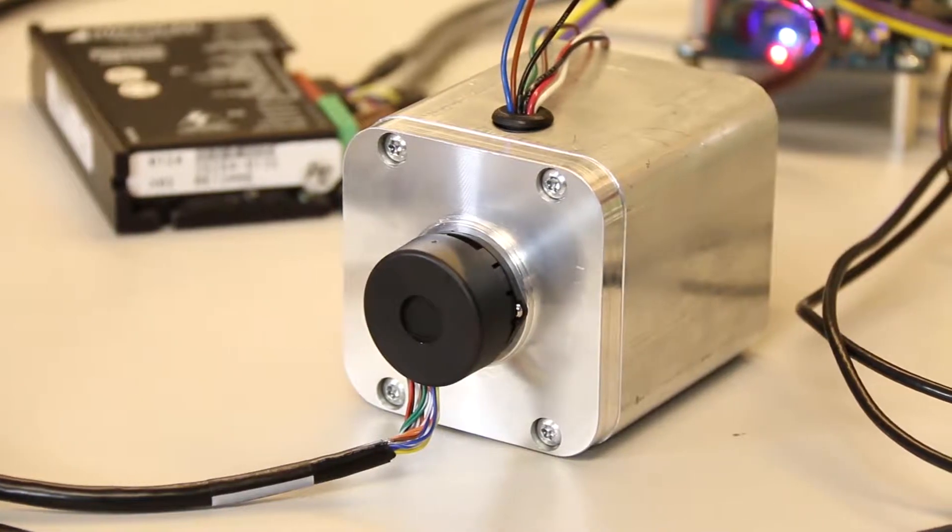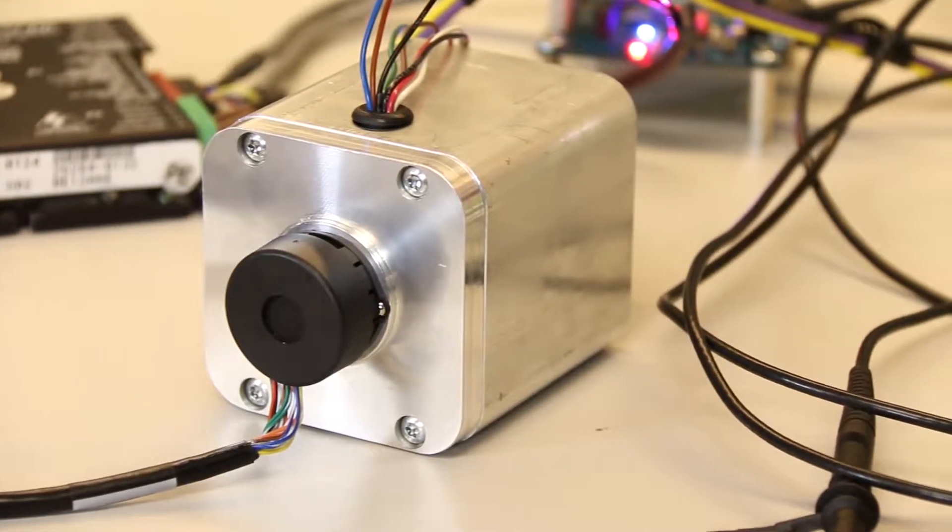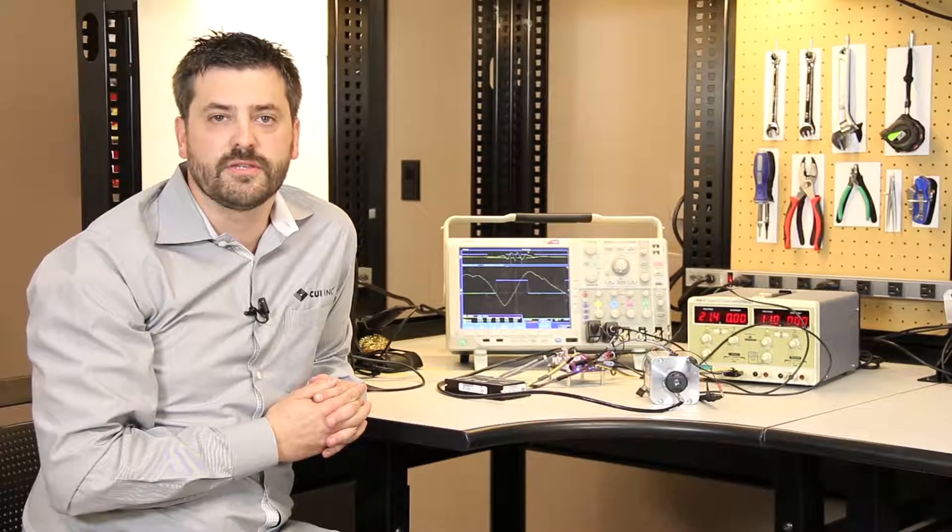Properly installing and aligning a commutation encoder onto a brushless DC motor has historically been a tedious and time-consuming process.